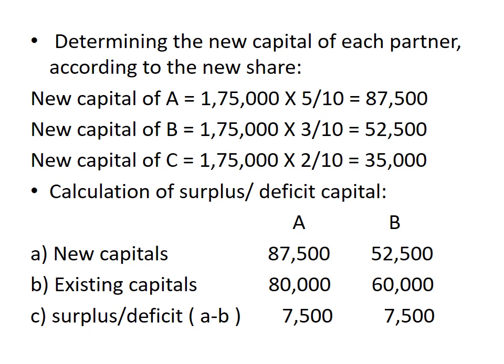The next step is determining the new capital of each partner according to the new share. The new sharing ratio is 5:3:2. So the new capital of A will be 5/10 of Rs. 1,75,000, which is Rs. 87,500. The new capital of B will be 3/10 of Rs. 1,75,000, which is Rs. 52,500. And the new capital of C is 2/10 of Rs. 1,75,000, which is Rs. 35,000 — as already stated in the question.